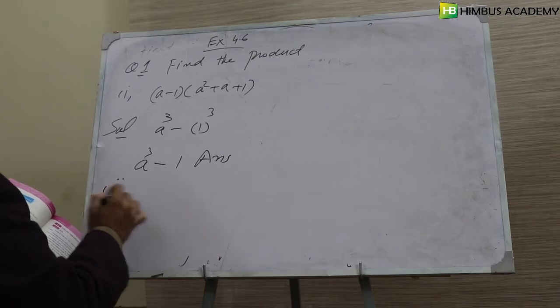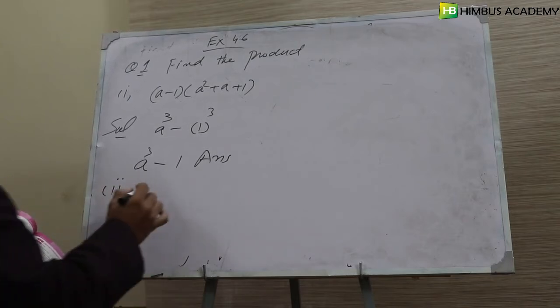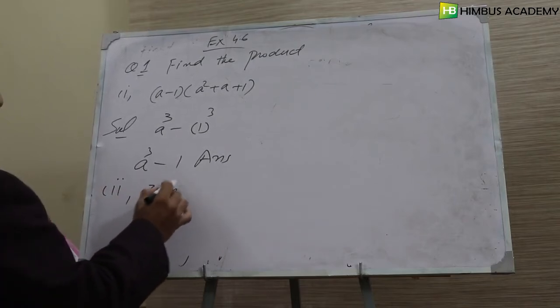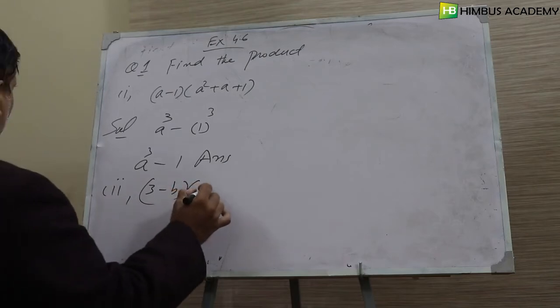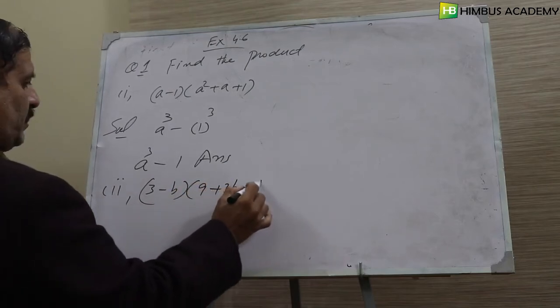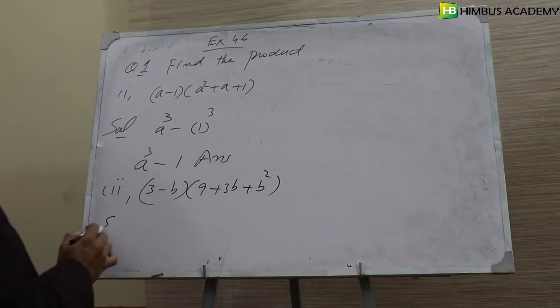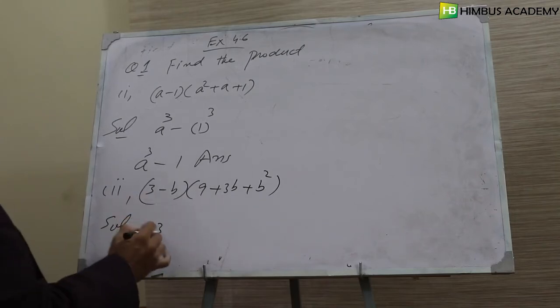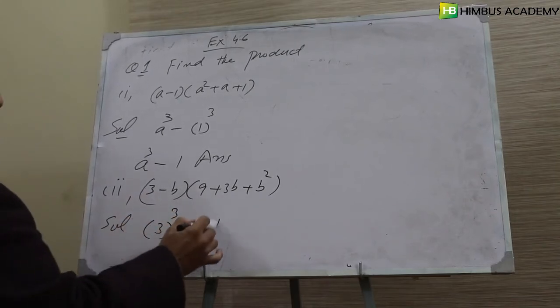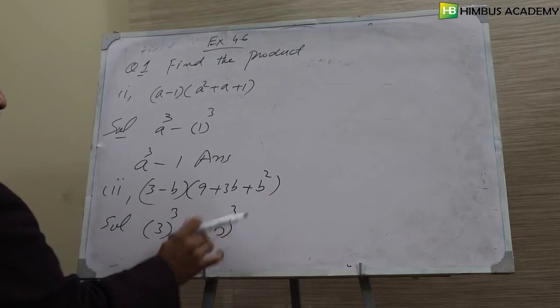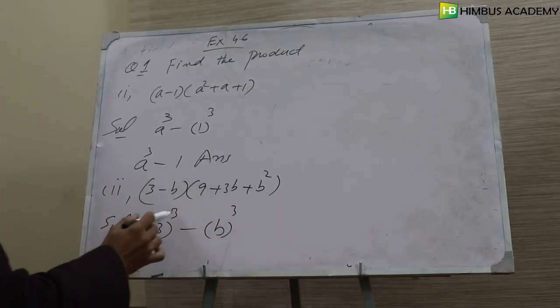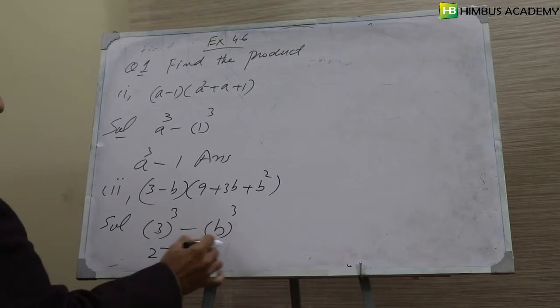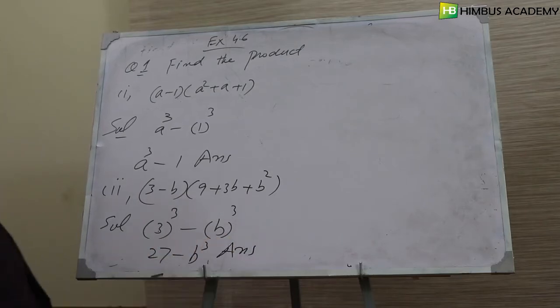Number two: 3 minus B, this is 9 plus 3B plus B square. You can see this is A minus B, so A cube minus B cube. A cube is 3 cube, which is 27. So 27 minus B cube is the answer.